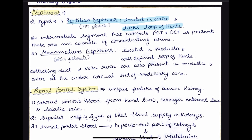The key points: reptilian nephrons account for 75% of filtration, are located in the cortex, and lack the loop of Henle. The second type, mammalian nephrons, are located in the medulla and have a well-defined loop of Henle, so they are capable of concentrating urine. Collecting ducts and vasa recta are present in the medulla. Mammalian-type nephrons are responsible for 25% of filtration. The nephron is very important and often asked in exams.